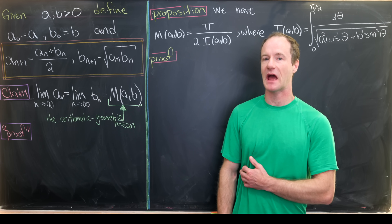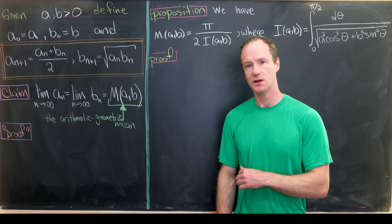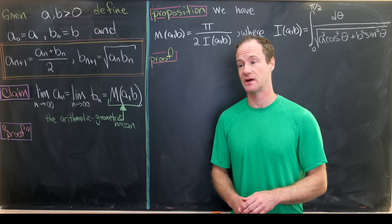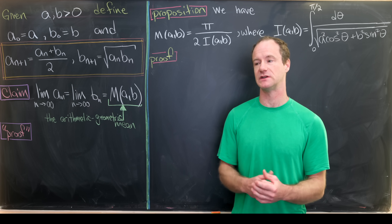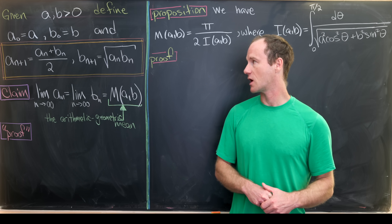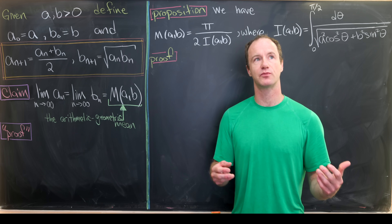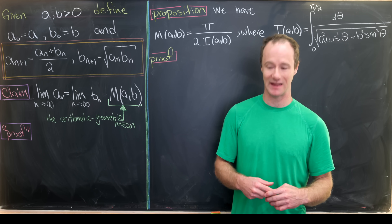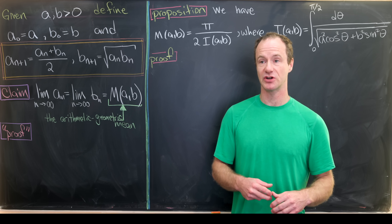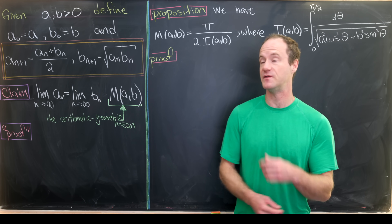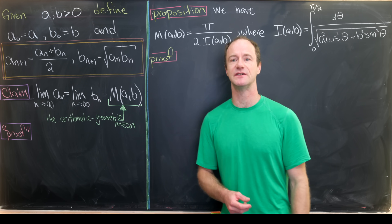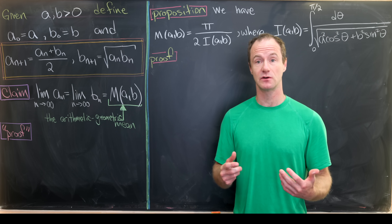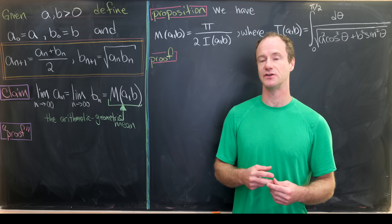Today I've got a really nice video on something called the arithmetic-geometric mean. You probably know what the arithmetic mean is — that's just the average, where you add two numbers and divide by two, or more generally add n numbers and divide by n. You've probably also heard of the geometric mean, where you take the product of two numbers and take the square root, or the product of n numbers and take the nth root. The arithmetic-geometric mean is some sort of infinite blending of these two means. We'll see how it's defined and prove a property related to elliptical integrals, which I made a mini-series on earlier.